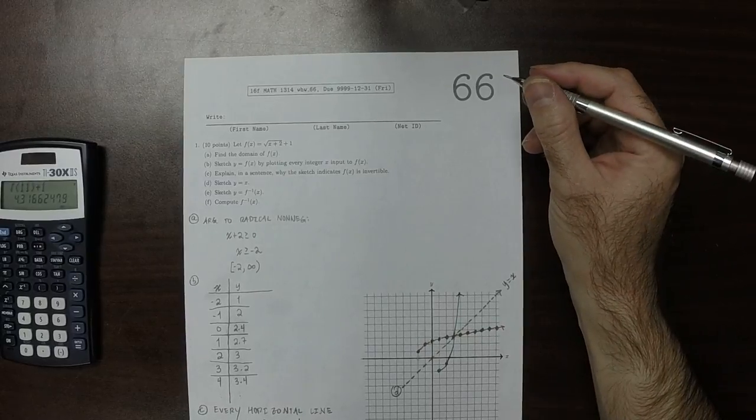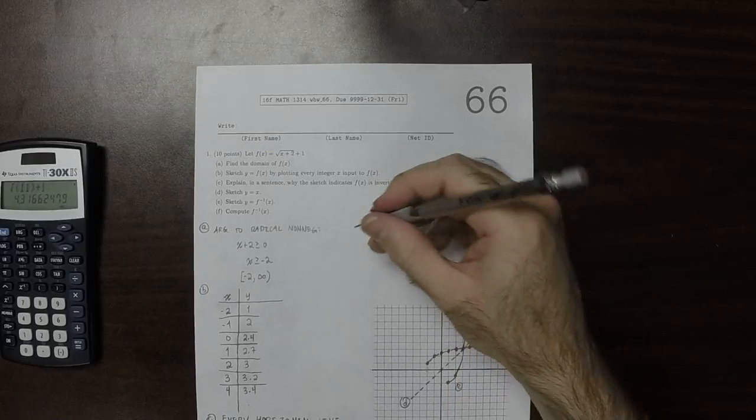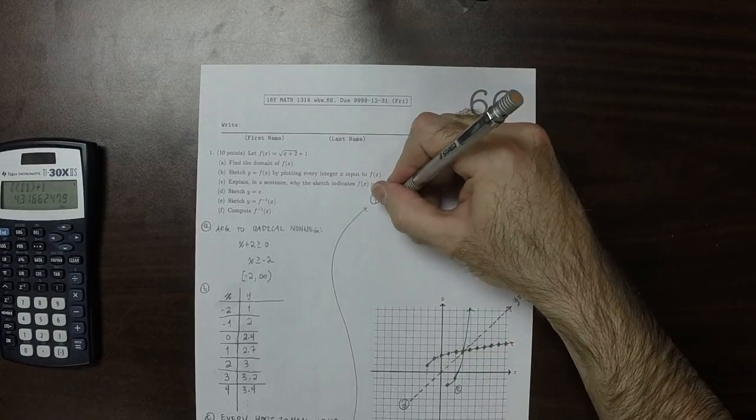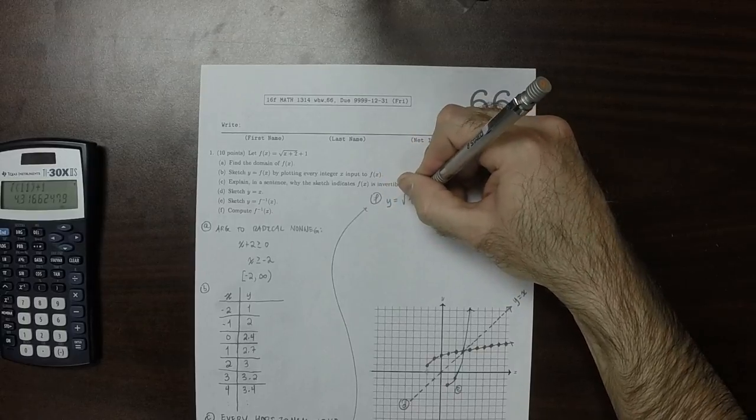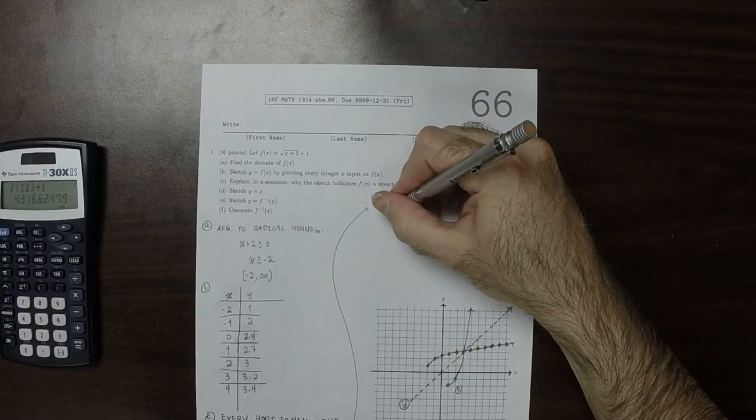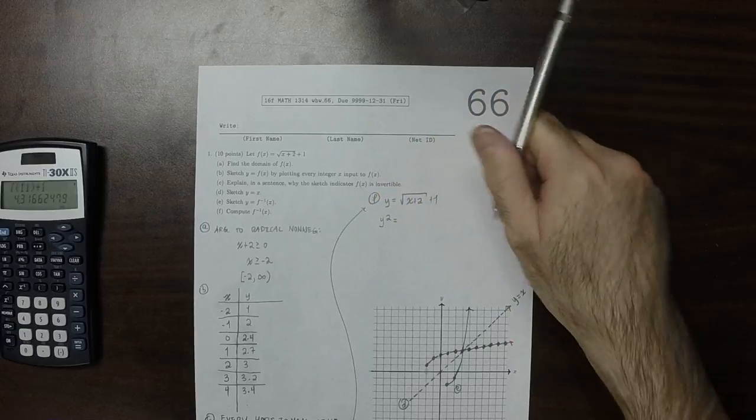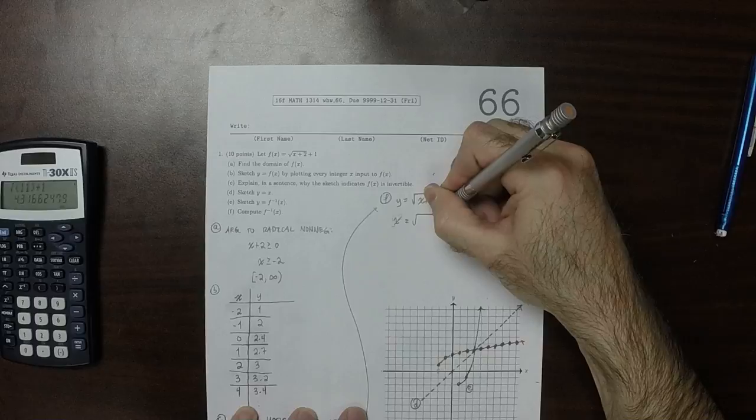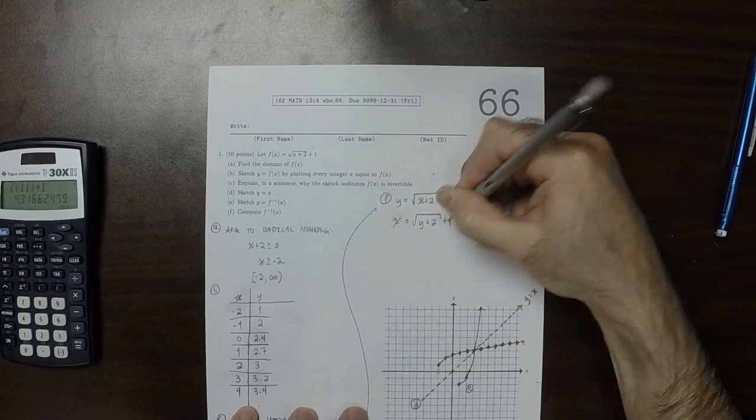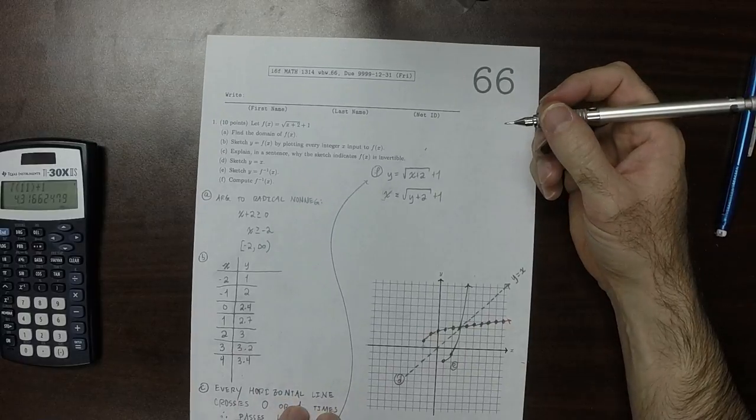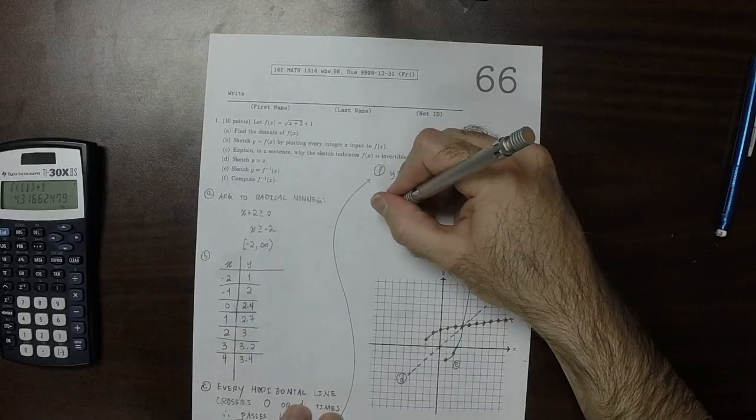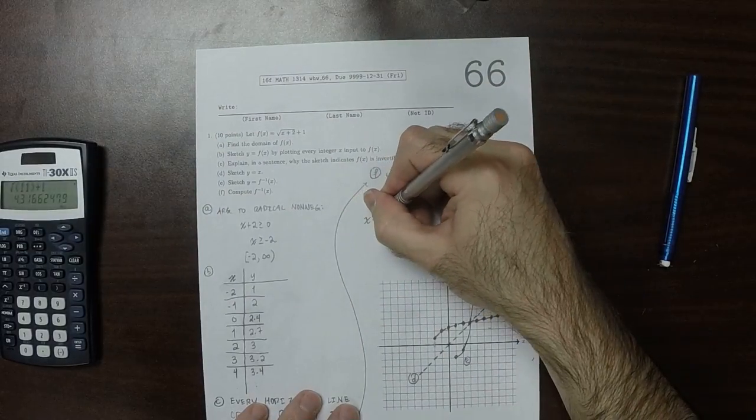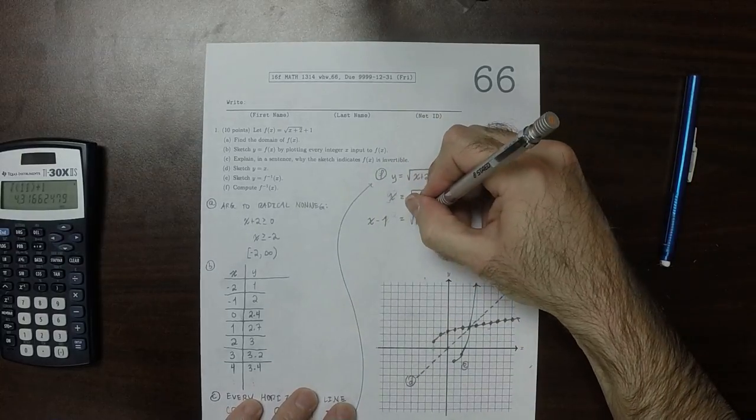And then finally F. Compute the inverse function. So we say Y is square root X plus 2 plus 1. And X is square root Y plus 2 plus 1. And X minus 1 is square root Y plus 2.